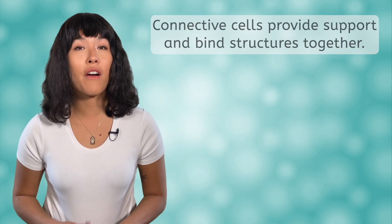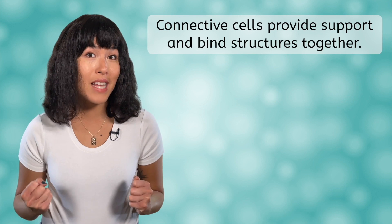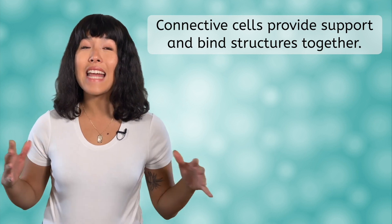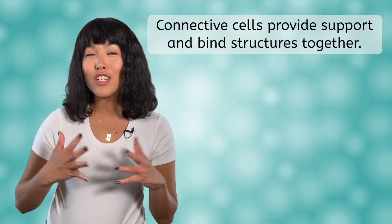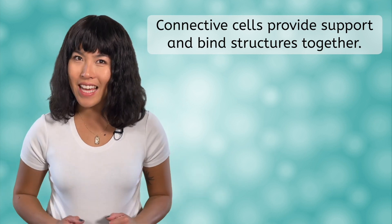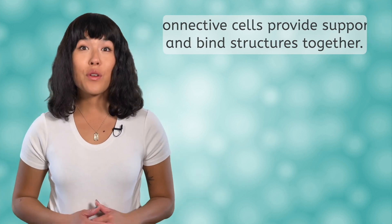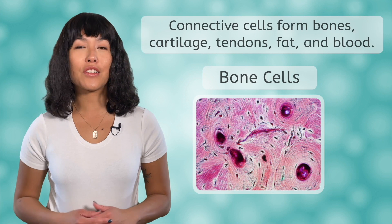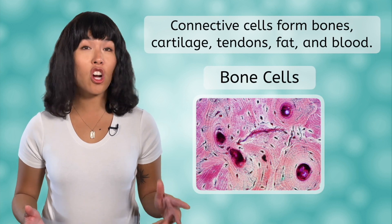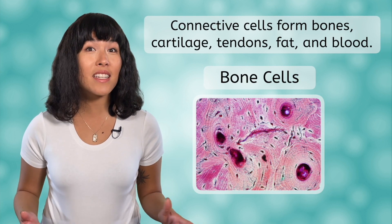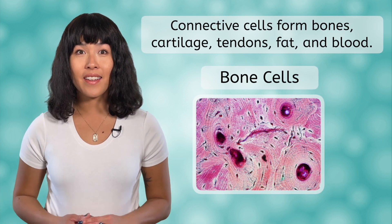Connective cells form connective tissues — makes sense, right? These cells and tissues provide support as well as connect and bind structures together. You can find these cells in bones, cartilage, tendons, fat, and blood. They are the most abundant and diverse types of cells in the body.